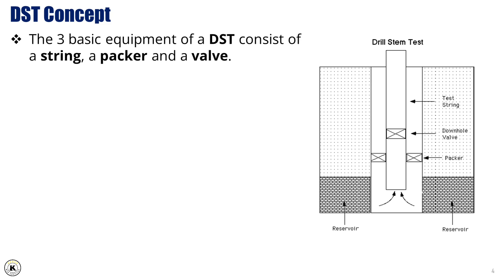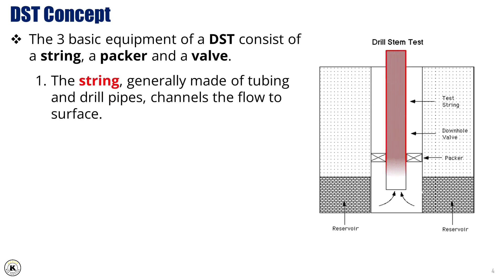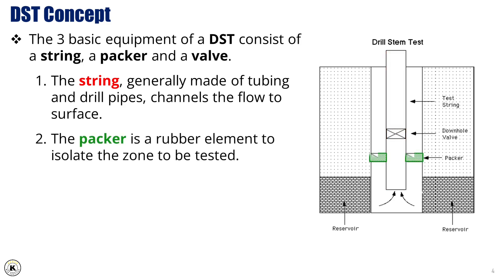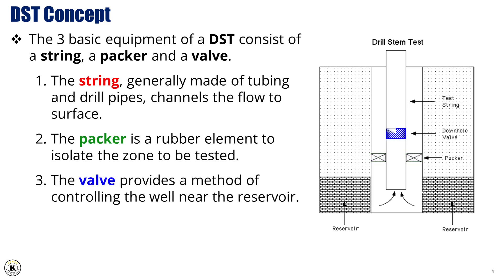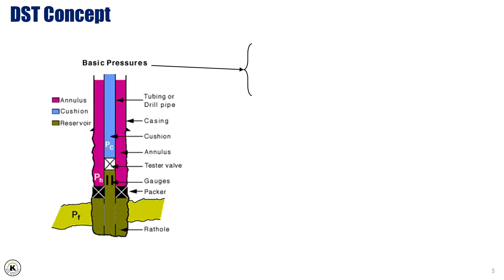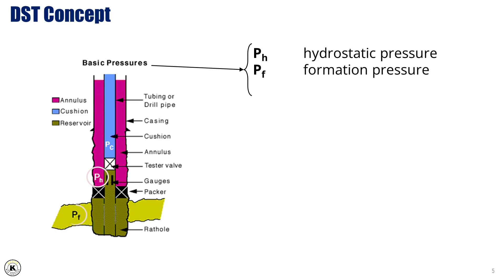The three basic equipment of a DST consists of a string, a packer, and a valve. The string, generally made of tubing and drill pipes, channels the flow to surface. The packer is a rubber element to isolate the zone to be tested. The valve provides a method of controlling the well near the reservoir. The three basic pressures involved in a DST are the hydrostatic pressure pH, the formation pressure PF, and the cushion pressure PC.